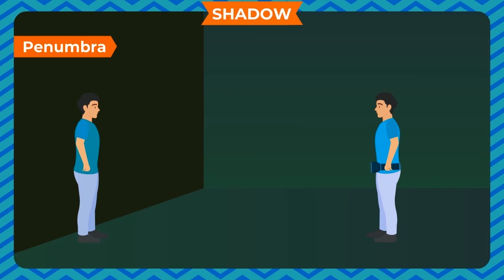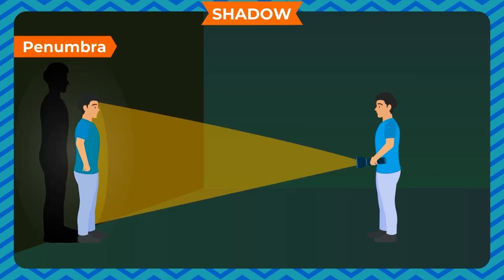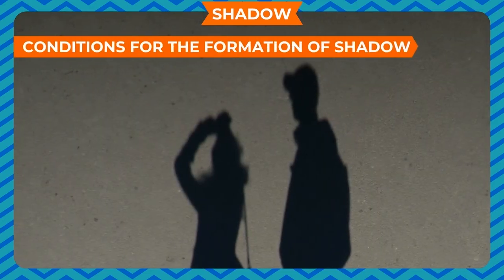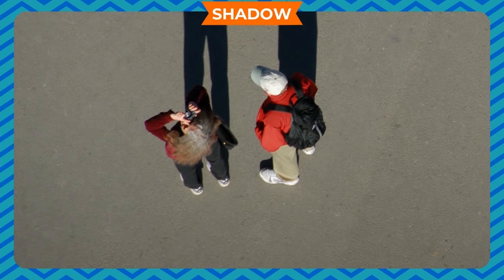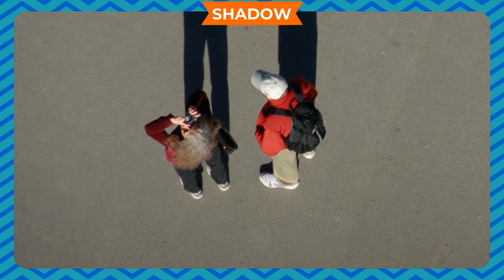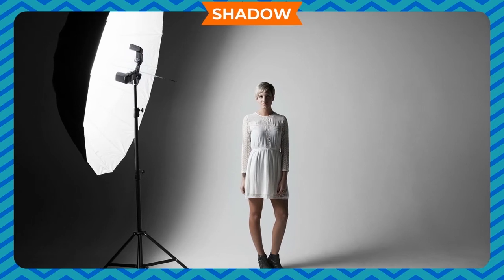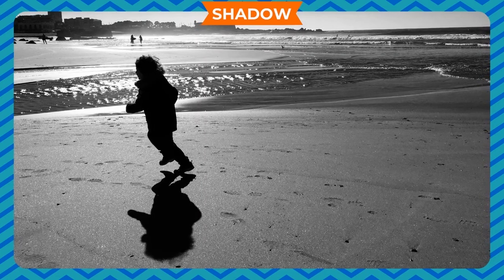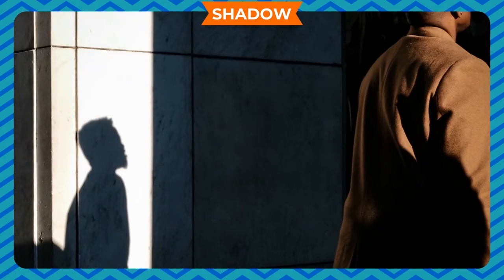Go to a dark place with your friend. Ask your friend to stand where there is no object such as a tree or building behind him. Focus the torch light on your friend — you can see a shadow. Now repeat the process with a background, and again focus the torch light on your friend — now you can see a shadow on the background. Conditions for the formation of shadow: there must be a source of light; there must be an opaque object to obstruct the path of light.